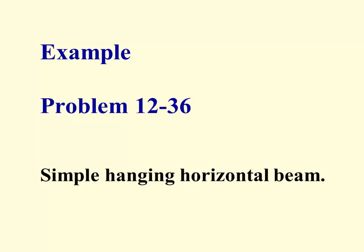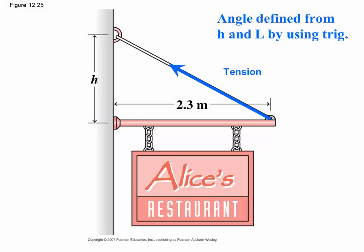Second example is the simpler problem involving a hanging horizontal beam. It's taken from problem 36 in chapter 12. Here we've got a tension in a cable that's holding up the beam that's holding the sign. The angle in this case is defined from H and L, the 2.3 meter length of that pole, by using trig.